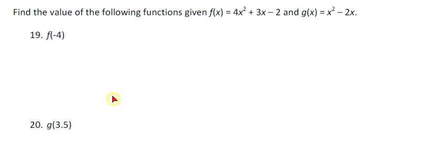This is problem 19 and 20 from our first semester exam review. It says find the value of the following functions given f of x equals 4x squared plus 3x minus 2 and g of x equals x squared minus 2x.